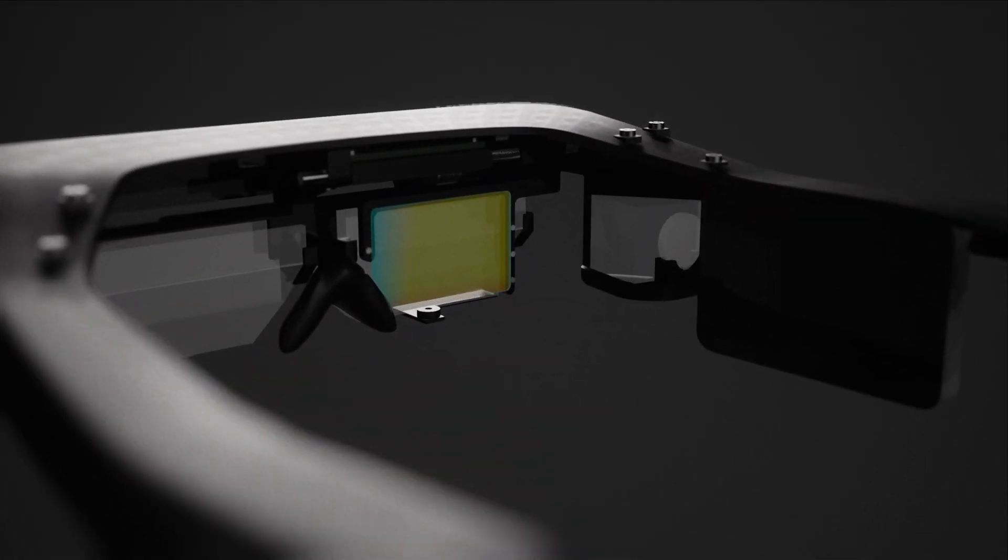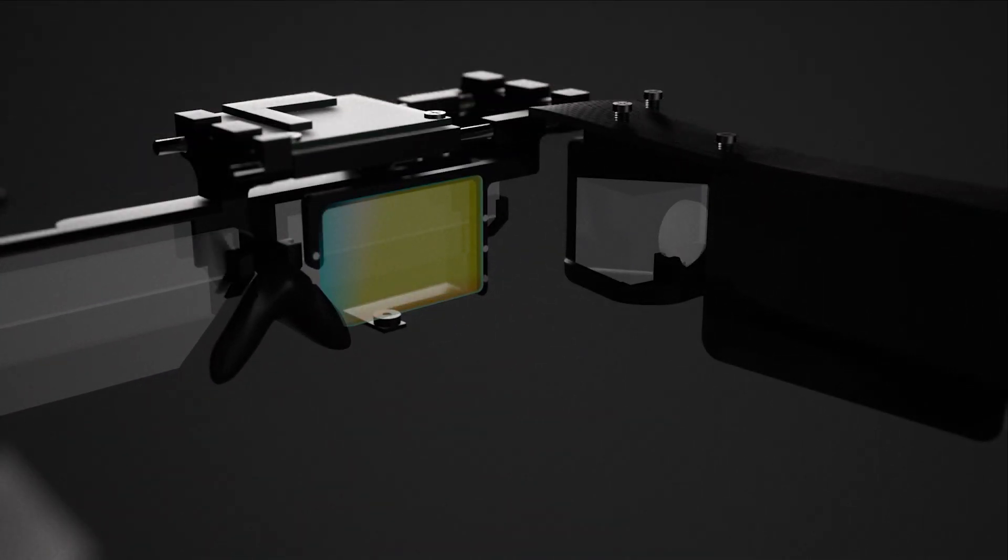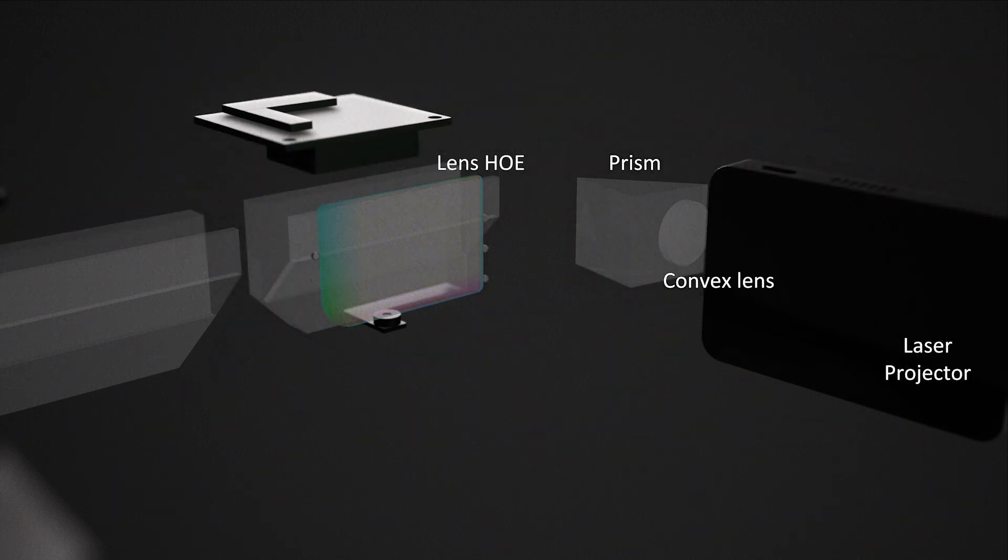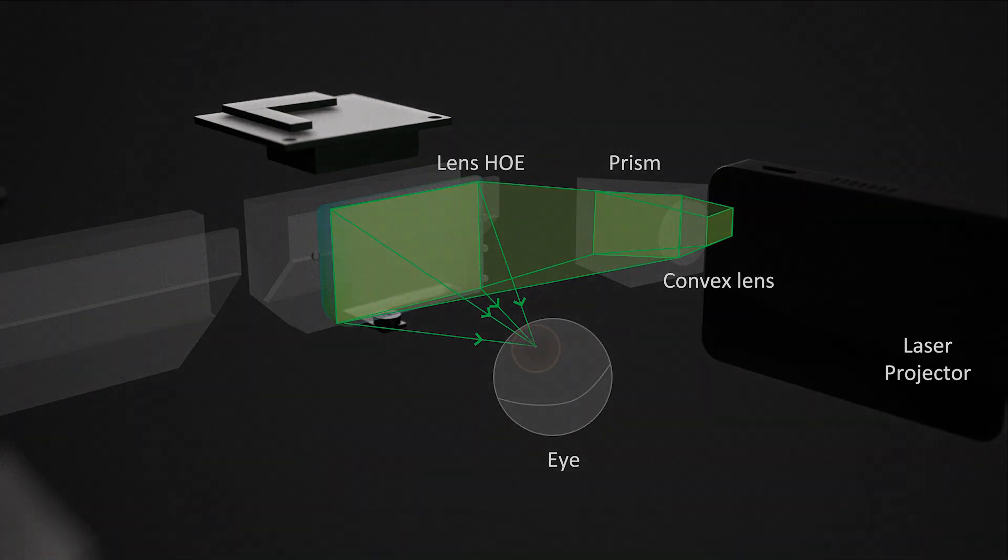This is a rendering of our wearable prototype. In green, we visualize the optical path of the peripheral display. The HOE is moved to keep this viewpoint aligned with the user's pupil center.